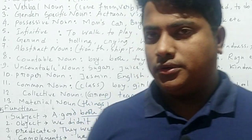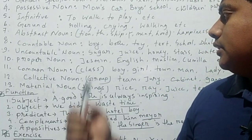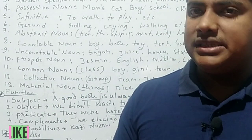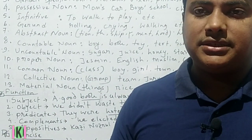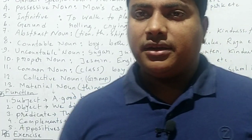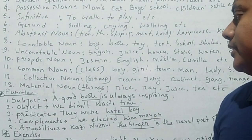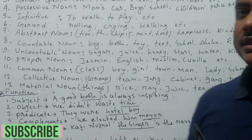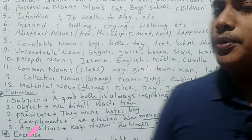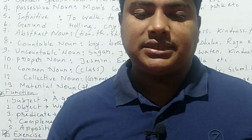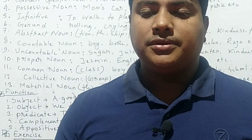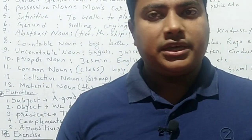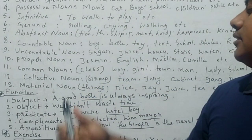Another very common noun type is the proper noun. A proper noun indicates a specific person, place, or thing, such as Jasmine, English, Muslim, Kabila, etc. Proper nouns never take a suffix or prefix, and a proper noun always starts with a capital letter.